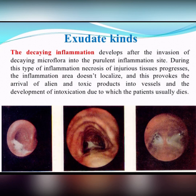The putrefactive inflammation develops after the invasion of decaying microflora into the purulent inflammation site. During this type of inflammation, necrosis of injured tissues progresses. The inflammation area does not localize, and this provokes the arrival of alien and toxic products into vessels and the development of severe intoxication, due to which the patient usually dies.